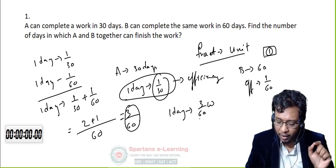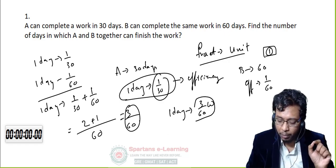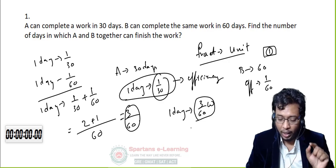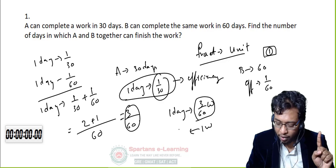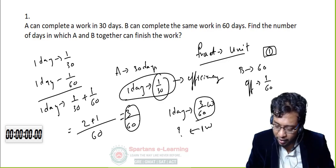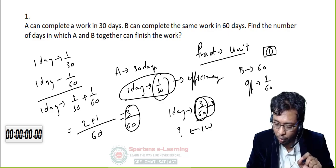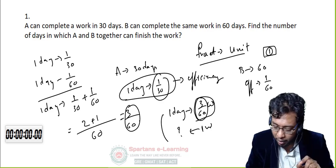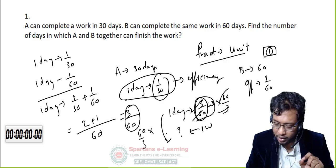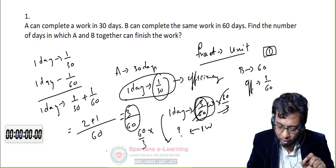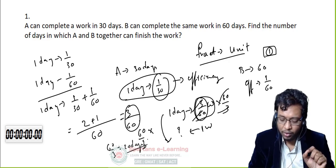In one day both together can do 3/60 of the work. To make the work equal to 1, multiply both sides by 60/3. So the number of days is 60/3, which is 20 days. This is called the fractional method.